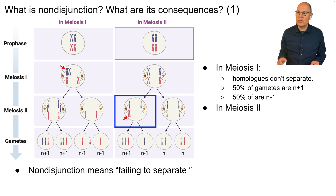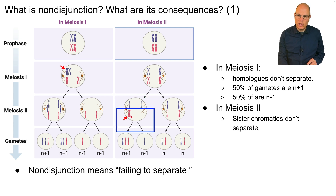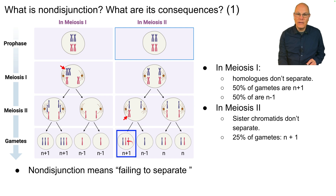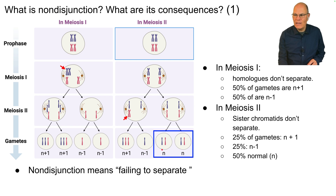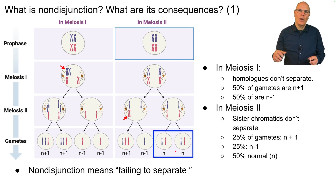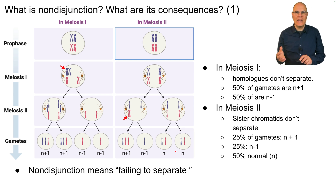If nondisjunction occurs during meiosis II, it involves the sister chromatids not separating. The sister chromatids don't pull apart, so the result is that 25% of the gametes are N plus one, 25% are N minus one — the haploid number missing one — and then 50% of the gametes will be normal. That's what nondisjunction is and how it can happen in meiosis I or meiosis II.